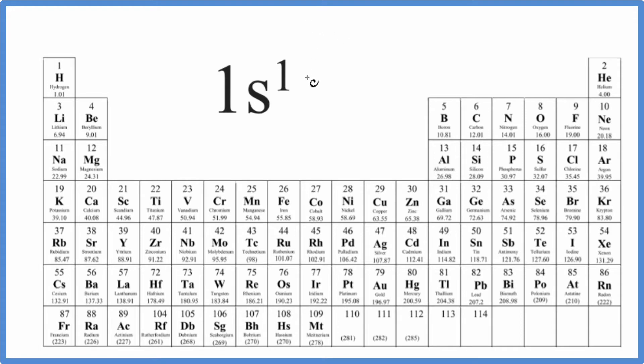First, we could just count the electrons up. There is only one electron for this element. Because all the elements on the periodic table are neutral, all we have to do is find out which element has one electron. If it's neutral, electrons and protons will be the same.